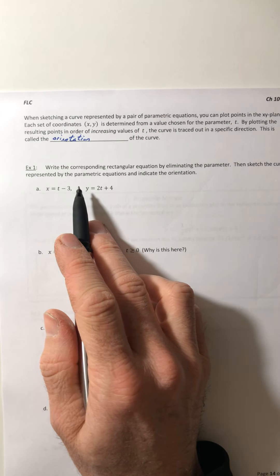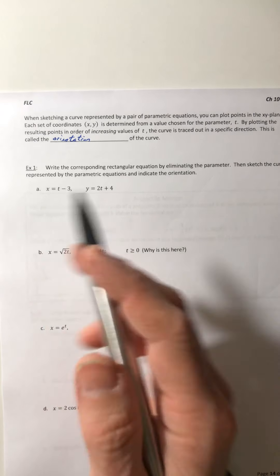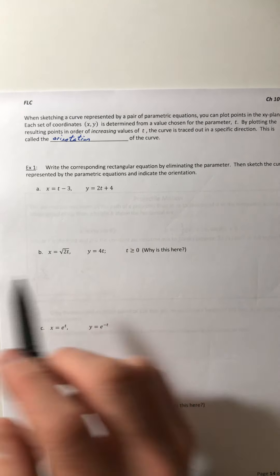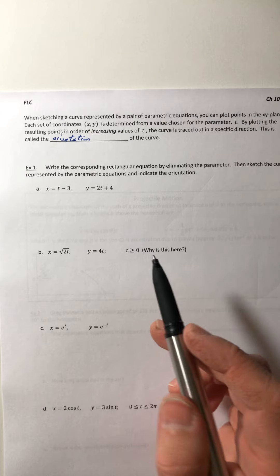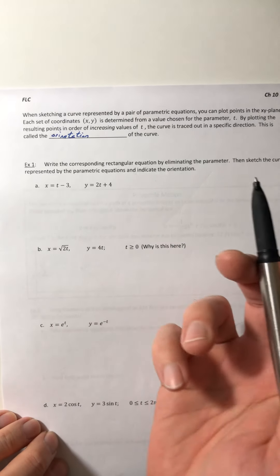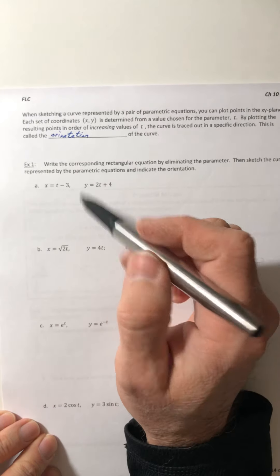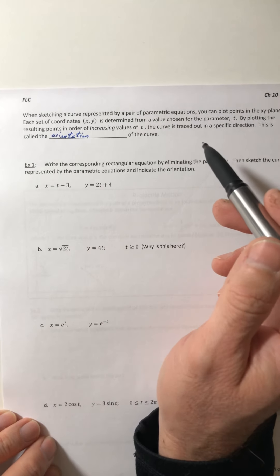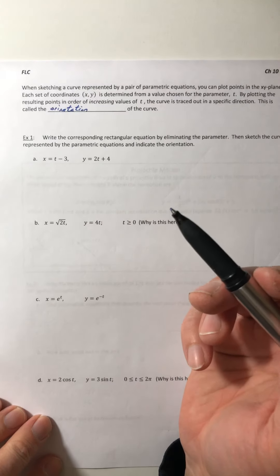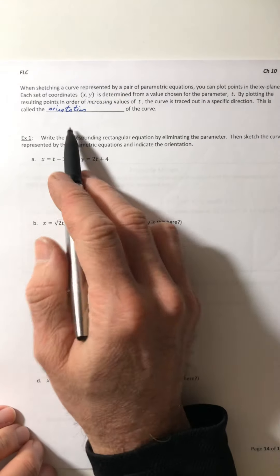And it's important for these things because you need to know, as time increases, as time goes on, which way would the object go? You can think of these curves as a path that you would walk, and you want to know what direction to head. So you need to know the orientation.